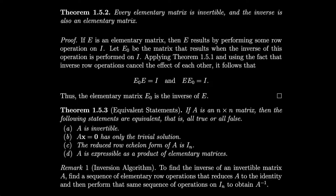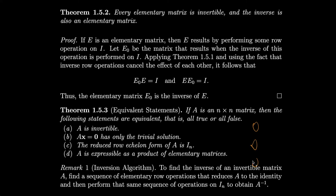If A is an n-by-n square matrix, the following statements are equivalent — they are all true or all false simultaneously: A is invertible; Ax = 0 has only the trivial solution; the reduced row echelon form of A is the identity; and A is expressible as a product of elementary matrices.